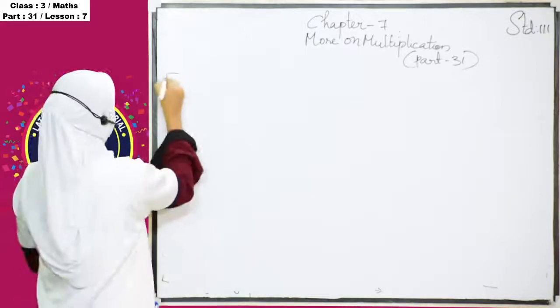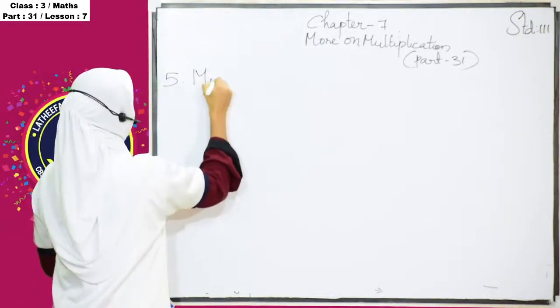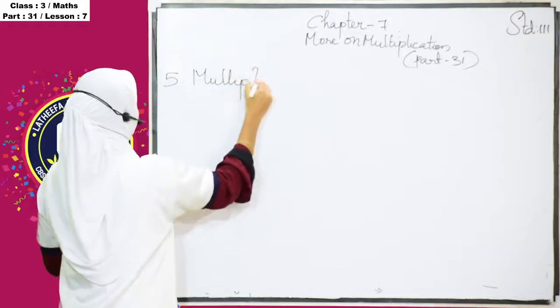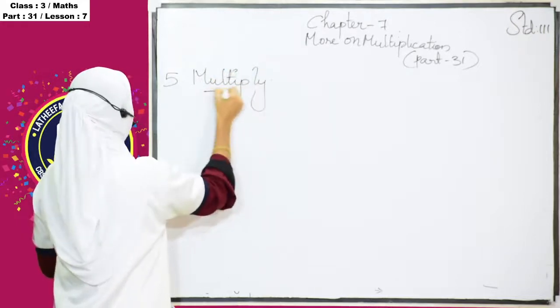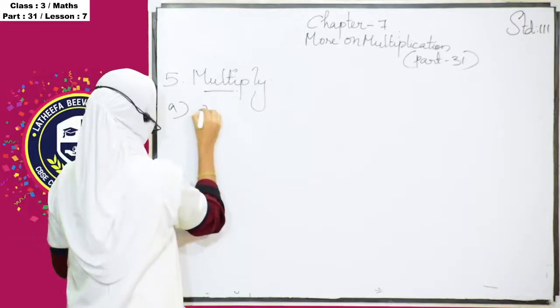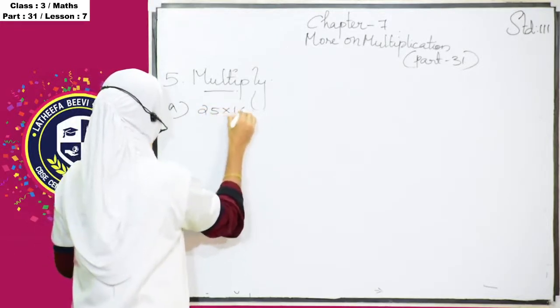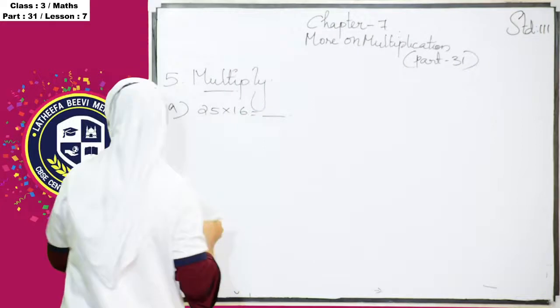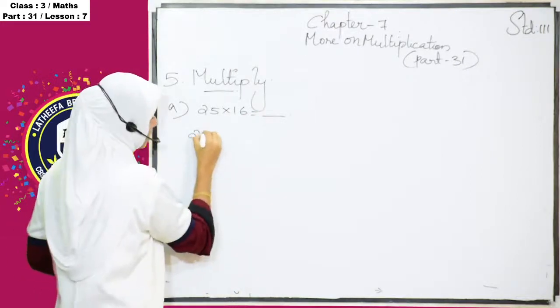So, the fifth question is, next question is multiply. 2-digit multiplication are direct multiplication are here, 1st question is, 25 into 16 is equal to dash, 25 into 16.